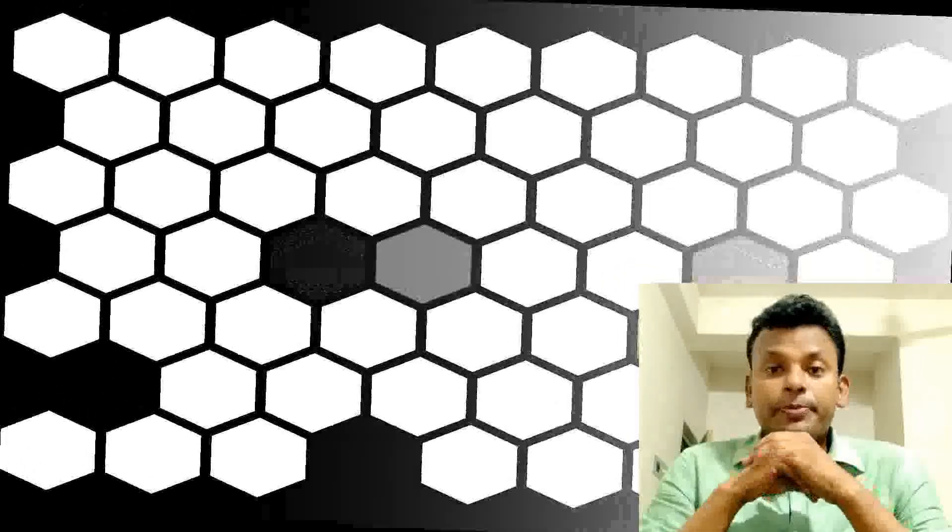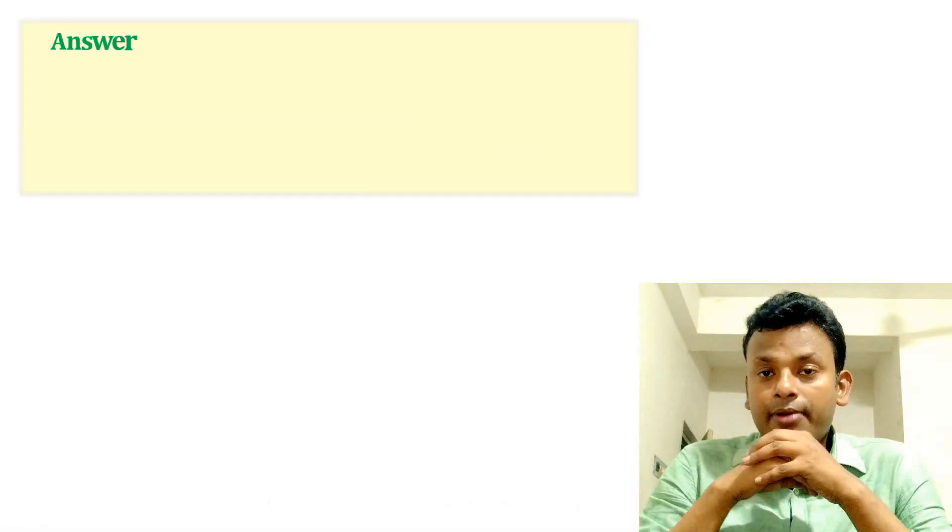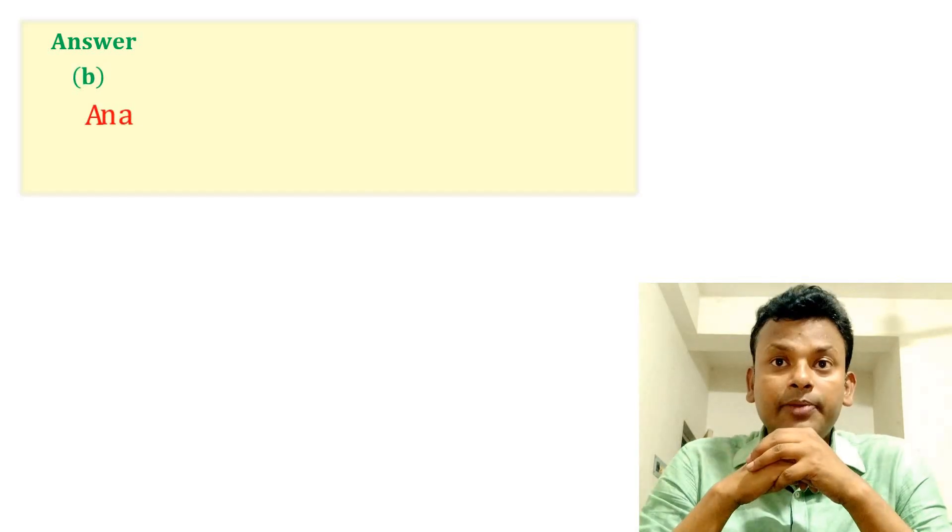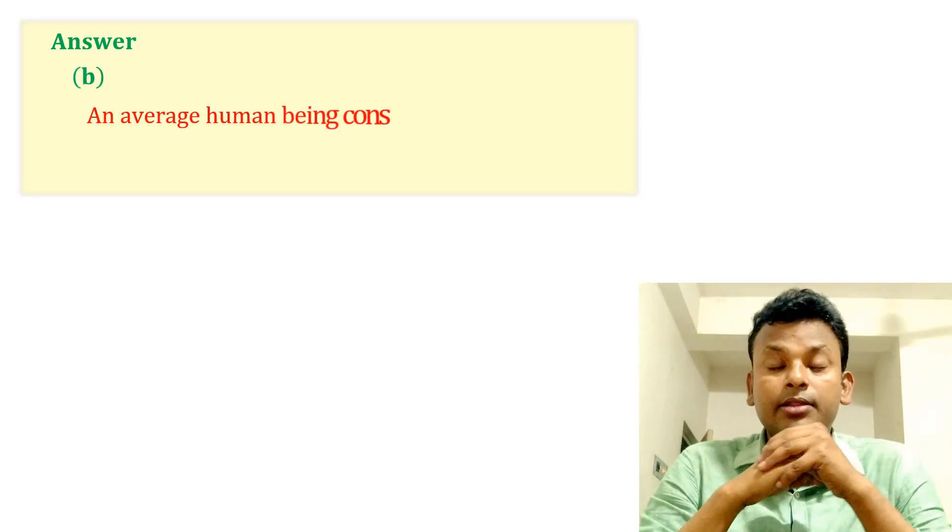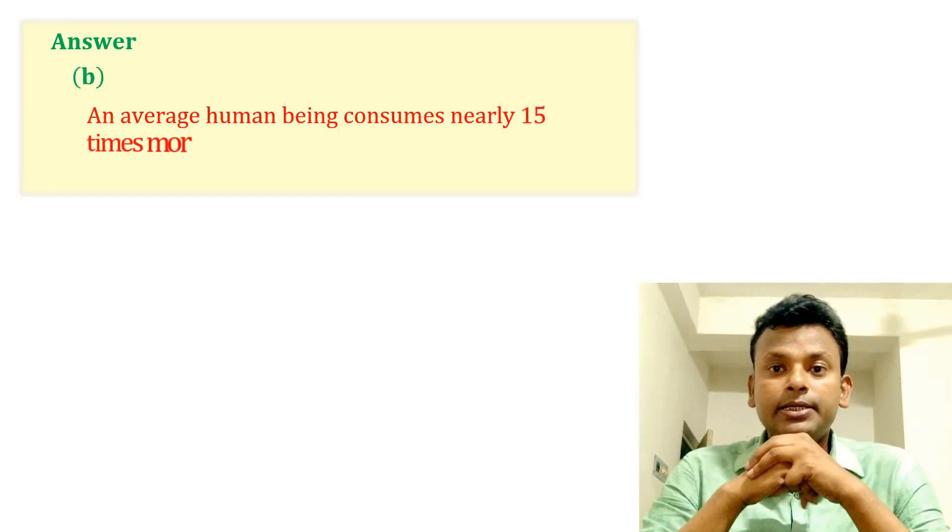Question 5: Correct statement is: Option A, Option B, Option C, Option D. Answer: Option B is correct answer. An average human being consumes nearly 15 times more air than food. So option B is correct answer.